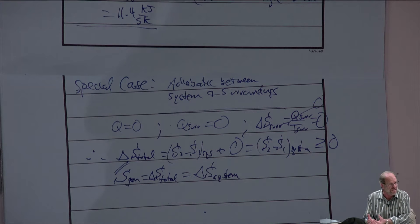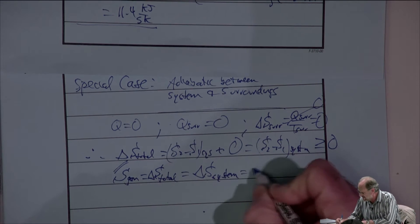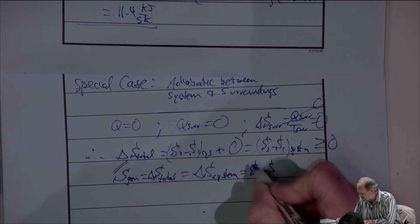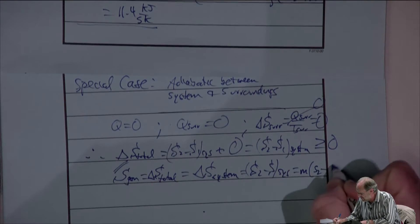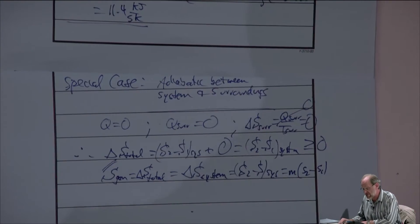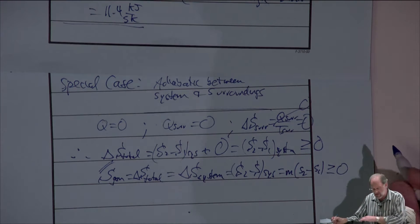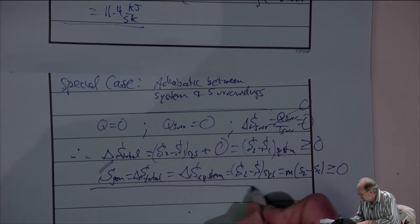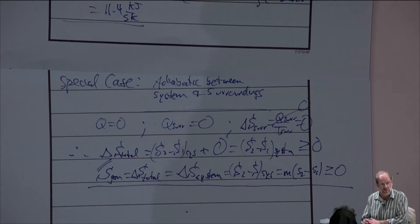So the entropy generation equals the total entropy change, which equals the entropy change of the system — but again, only for the adiabatic case where there's no heat transfer. If it's a well-insulated system, there's no heat transfer. Nonetheless, entropy generation equals the total entropy change, equals S2 minus S1 for the system, which is also mass times the specific entropy change (lowercase s2 minus s1), and this must be greater than or equal to zero.